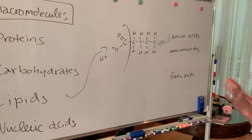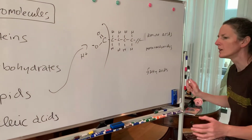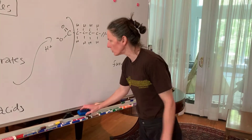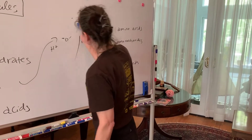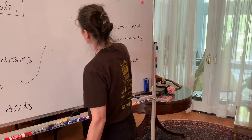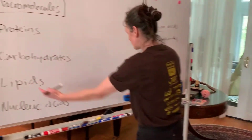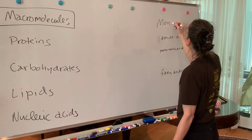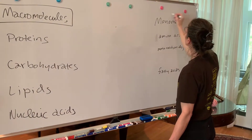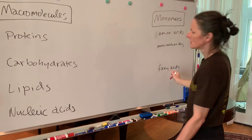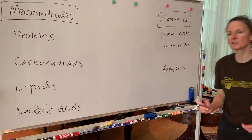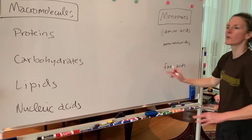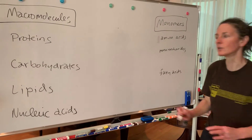So we're breaking down large macromolecules into their component parts — monomers. In the case of lipids, fatty acids aren't technically monomers because they're linked to the glycerol molecule, but for our purposes we'll consider them the smallest component we're going to break lipids down into.